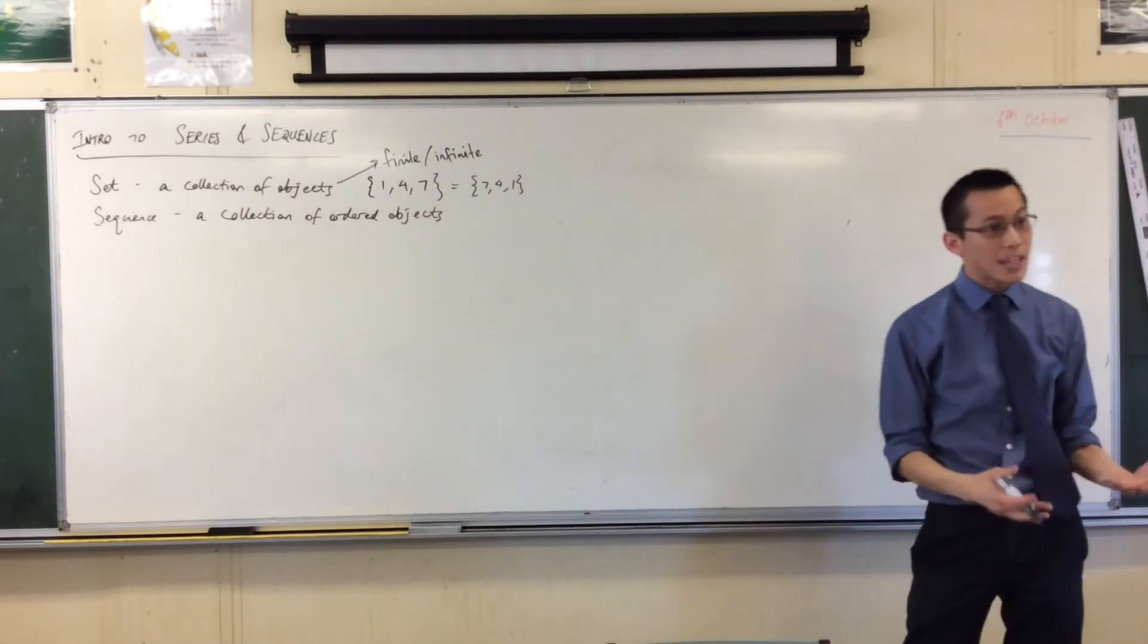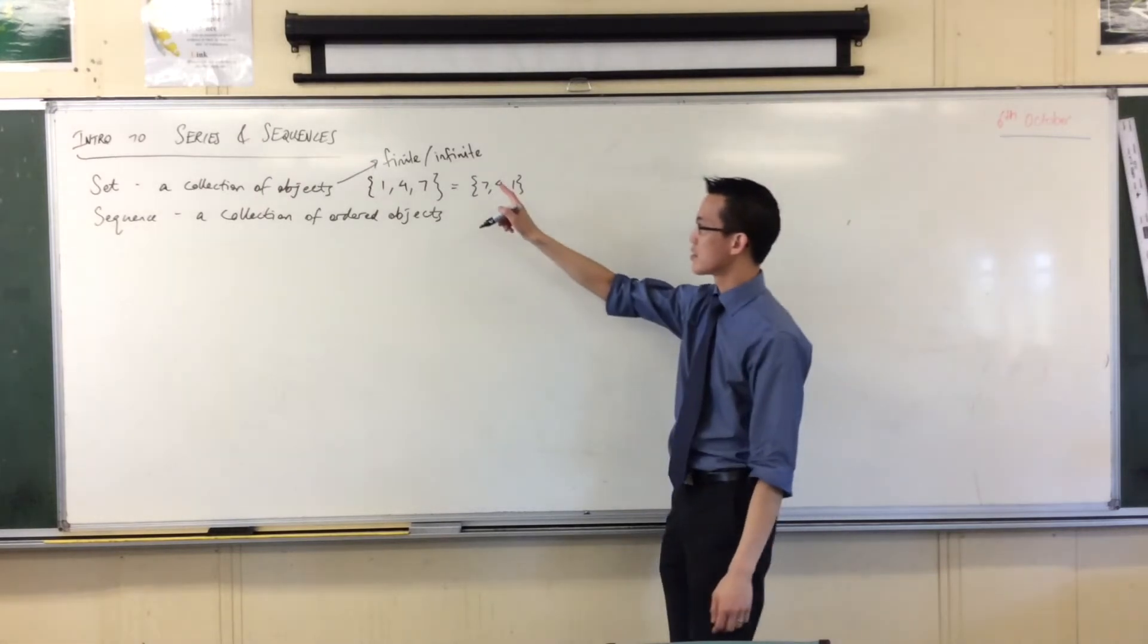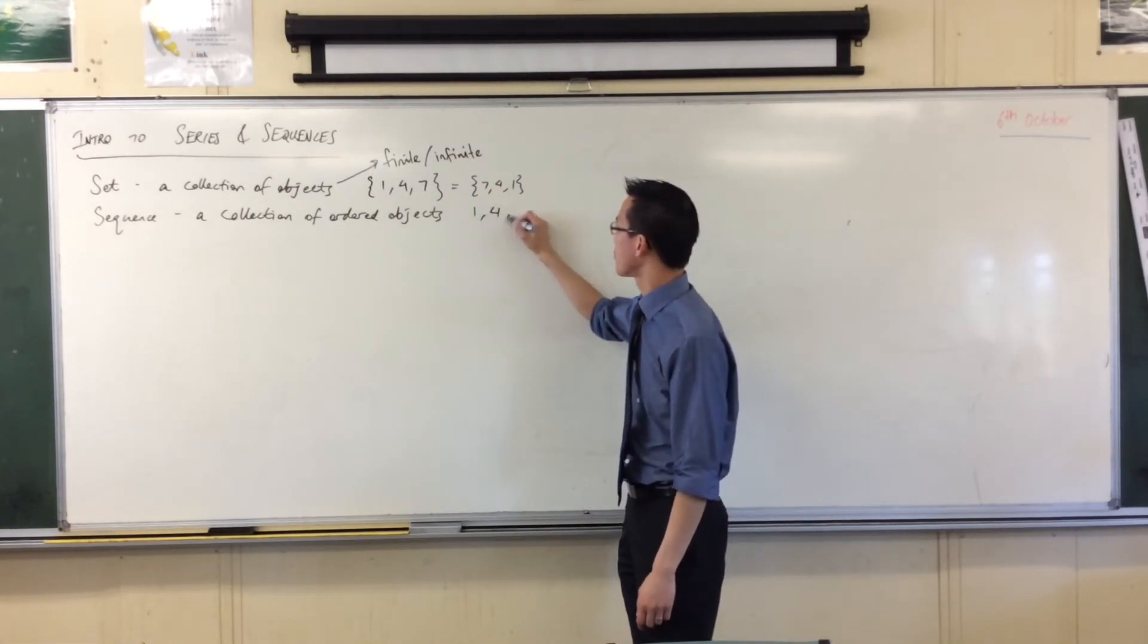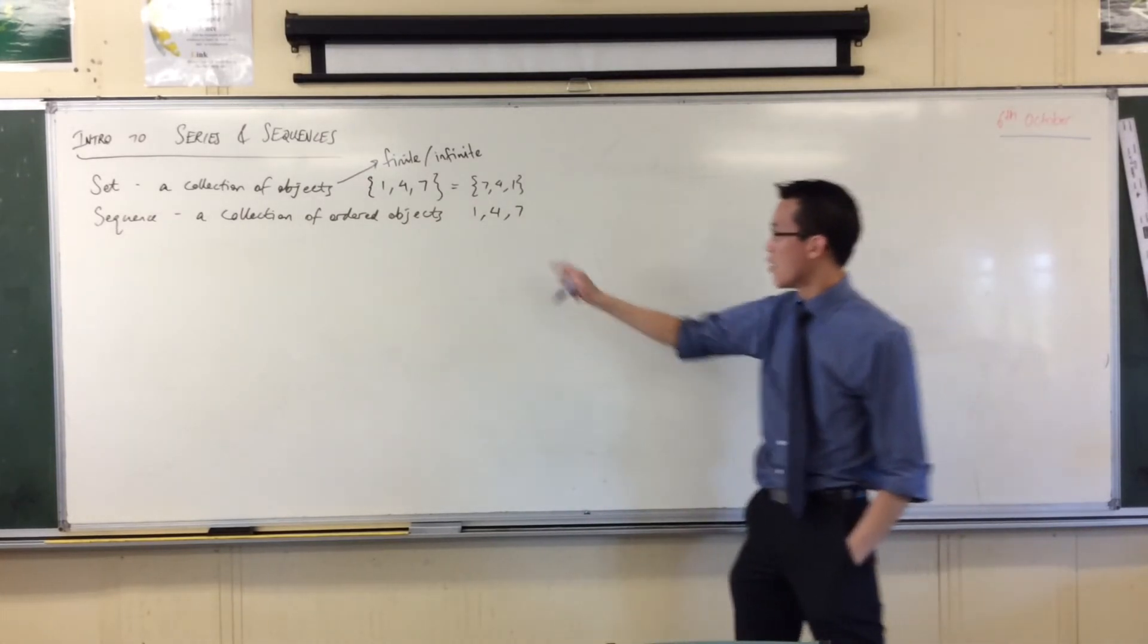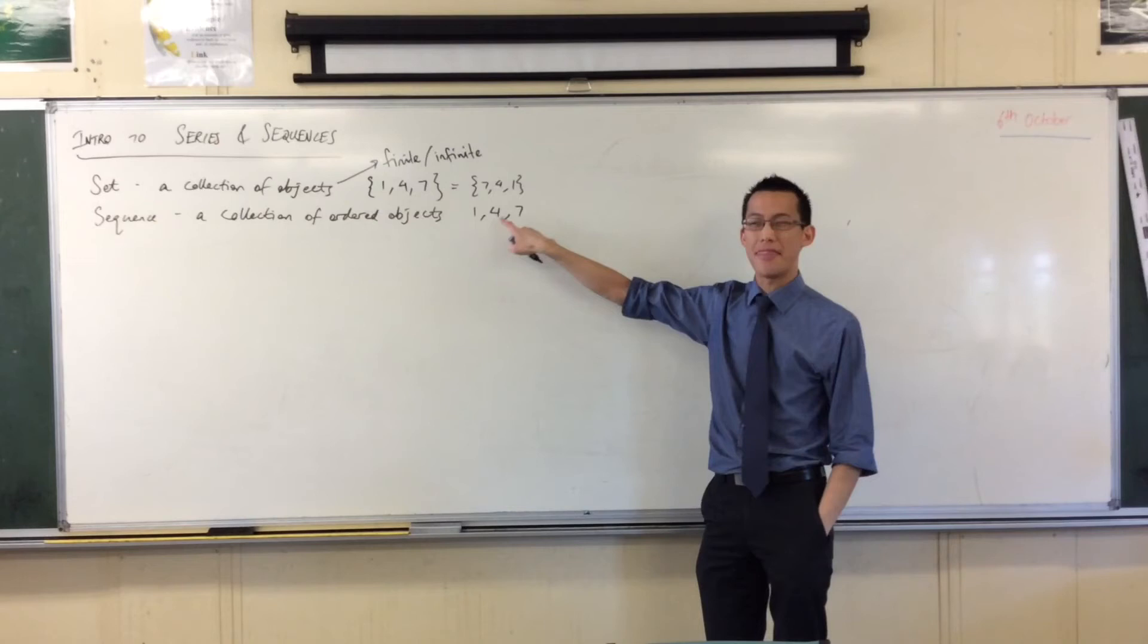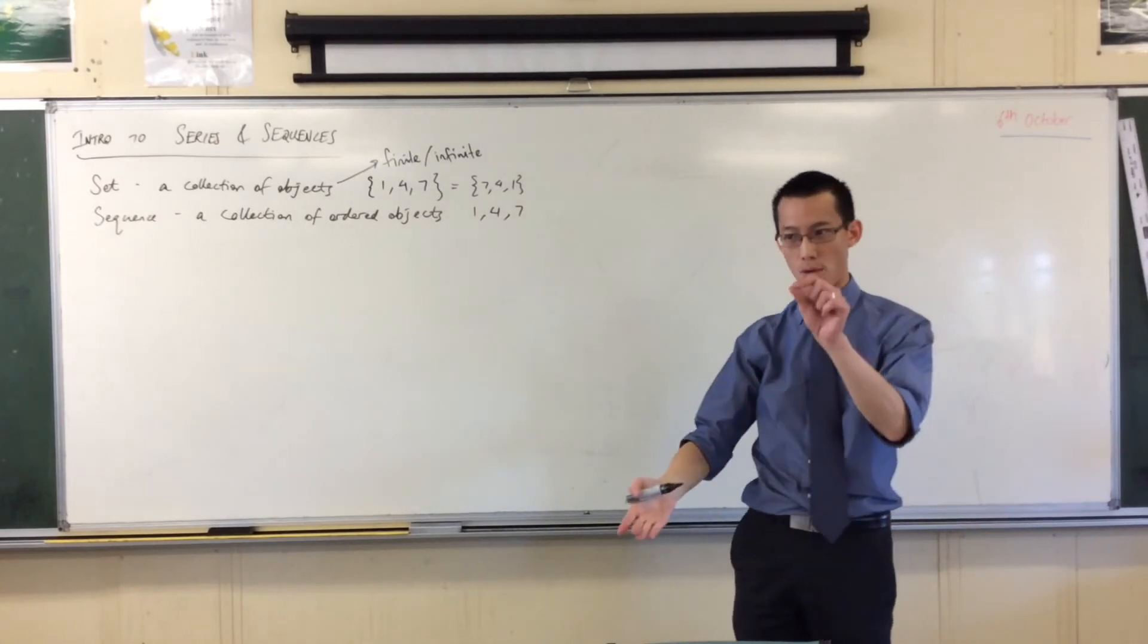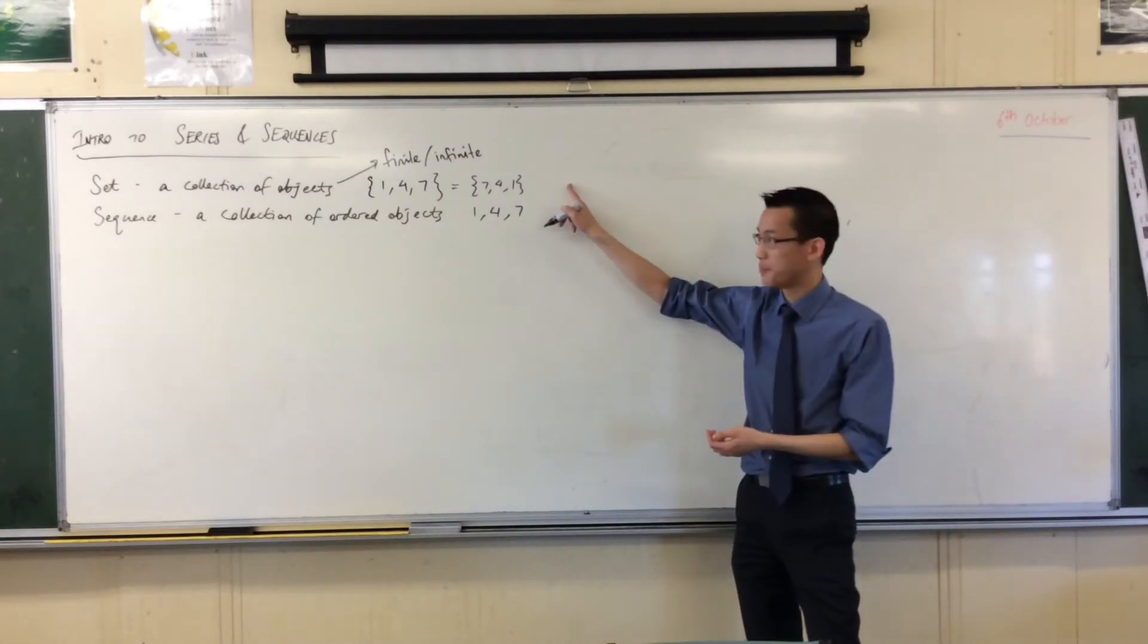Now sequences are denoted in exactly the same way as sets, just without the braces. So for example, here is a sequence. Now this sequence, one and then four and then seven, is completely different from seven and then four and then one. Different sequences, different rules, even though they have the same objects in them.